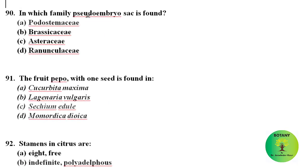Pseudo-embryo sac is found in family Podostemaceae. Podostemaceae is the only family of angiosperms where double fertilization is not known to occur. The fruit pepo with one seed is found in Sicyum edule, family Cucurbitaceae.